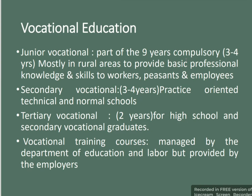Vocational education includes junior vocational education, which is part of the nine-year compulsory education lasting three to four years, mostly in rural areas, providing basic professional knowledge and skills. Secondary vocational education lasts three to four years and is practice-oriented in technical and vocational schools. Technical vocational programs are two years for high school and secondary vocational graduates. Vocational training courses are managed by the Department of Education and Labor but provided by employers.